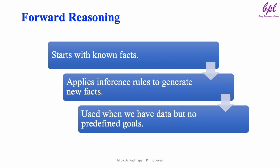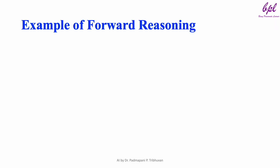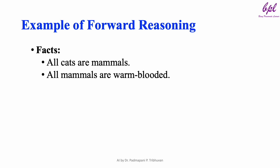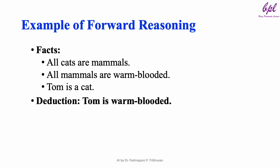For example, starting from known symptoms, forward reasoning can help deduce potential diseases in a patient. Now, let's look at a simple example. Consider we have the following facts: all cats are mammals, all mammals are warm-blooded, and Tom is a cat. Using forward reasoning, we can conclude that Tom is warm-blooded. This process works sequentially, applying inference rules step-by-step to arrive at the conclusion.